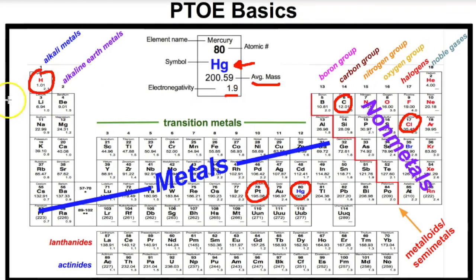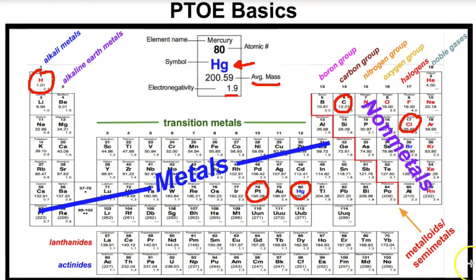So that's Dmitry Mendeleev and his periodic table, and this is today's periodic table. Become familiar with it — know where you find the metals and nonmetals, know that potassium is an alkali metal, magnesium is an alkaline earth metal, and that fluorine is a halogen. If you like what you see, click the subscribe button in the bottom right-hand corner, feel free to leave comments below, and I hope you found this helpful.